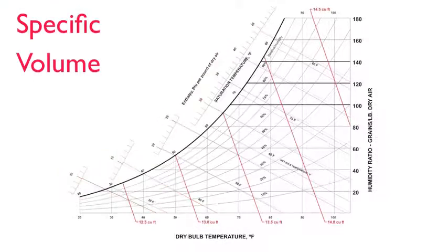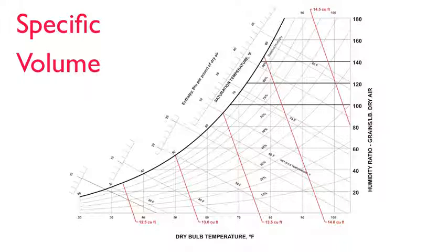Specific volume is shown by the red oblique lines equidistant from each other. This is in contrast to the wet bulb temperature lines. With wet bulb temperature, the angle is wider and the distance between the lines increases proportionately from lower left to upper right. Specific volume increases as the temperature and/or moisture increases.